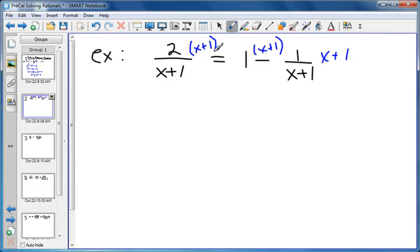Make sure you multiply every piece by it. Here they just cancel out, leaving two. One times x plus one is just x plus one. Here they cancel out, leaving just the one.